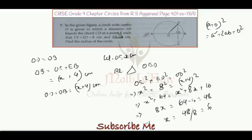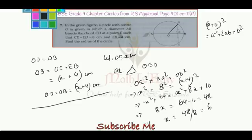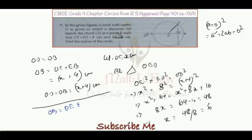So OE equals to 6 centimeter. In order to find the radius, we can simply write that OB is the radius, which equals to OE plus EB, which will be equals to 6 plus 4 centimeter, which equals to 10 centimeter. So the answer is 10 centimeter, which is the radius.